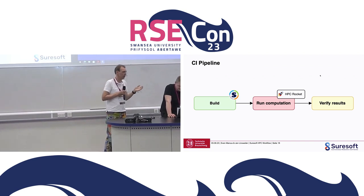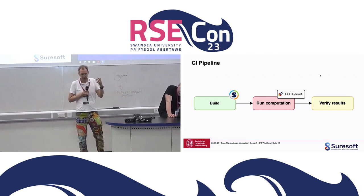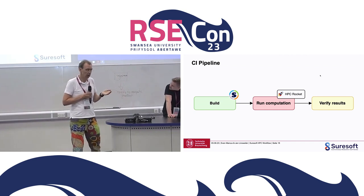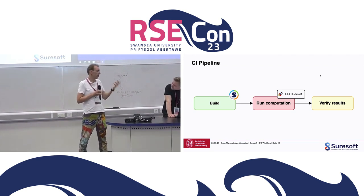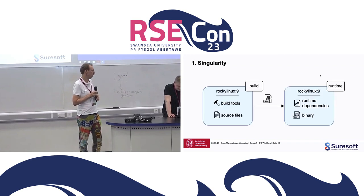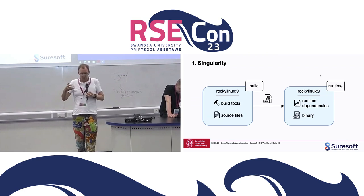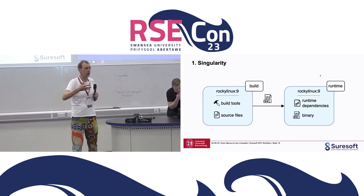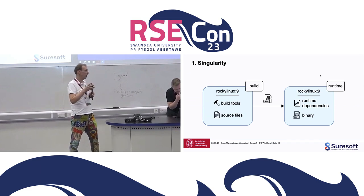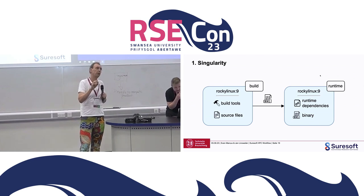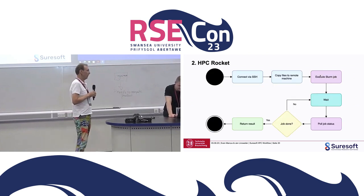The pipeline looks like this: we have a build process using a CI runner where we build the container images to run within Singularity. Then HPC Rocket is used to run the simulation on the HPC systems. Afterwards, we compare the results using field compare. To generate the containers, we use a two-stage system. First, we build a container where we install all dependencies needed to create the actual executable. Then we have a specific smaller image where only the runtime dependencies are included.